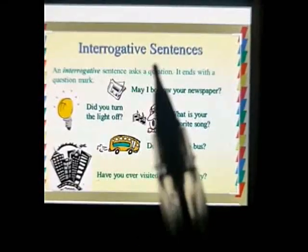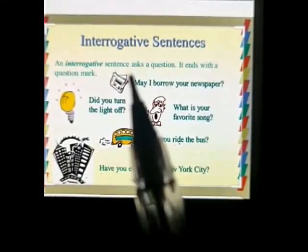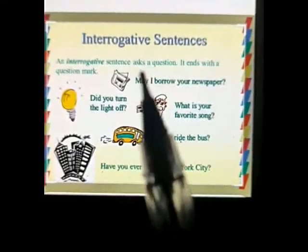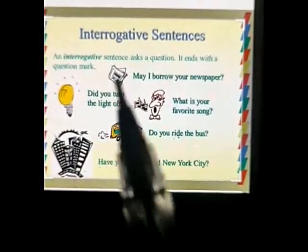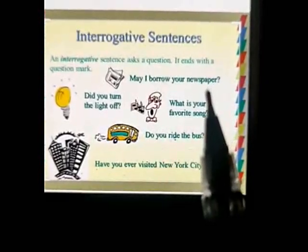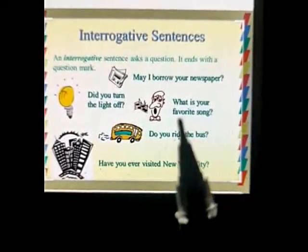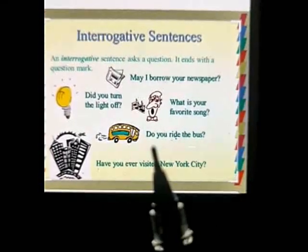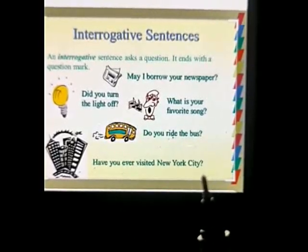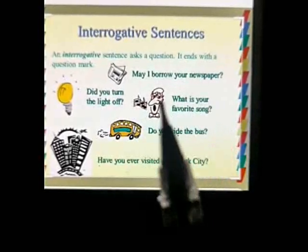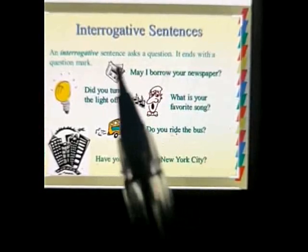The second kind of sentence is the interrogative sentence. Interrogative sentences are those used to ask questions, and they always end with a question mark. For example: 'May I borrow your newspaper?' 'Did you turn the light off?' 'What is your favorite song?' 'Do you ride the bus?' 'Have you ever visited New York City?' These are all examples of interrogative sentences.